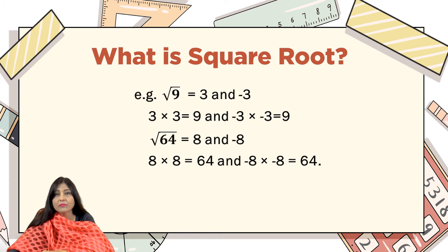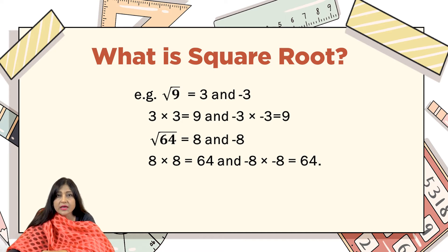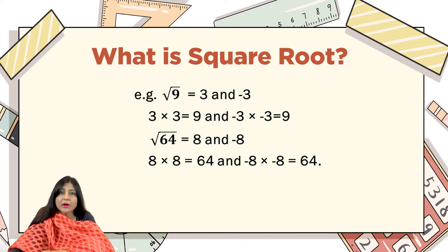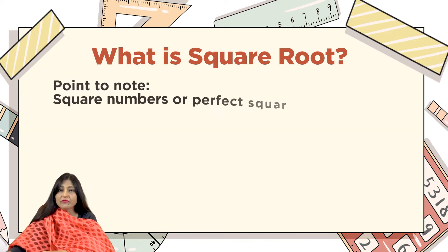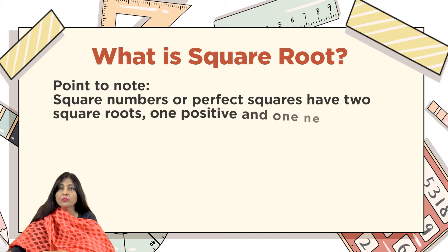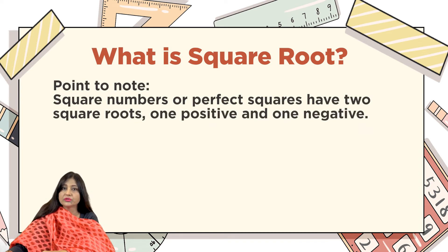For example, the square root of 9 is 3 and −3, because 3×3=9 and (−3)×(−3)=9. The same goes for 64: the square root of 64 is 8 and −8, because 8×8=64 and (−8)×(−8)=64. So the key point is that perfect squares have two square roots — one positive and one negative.